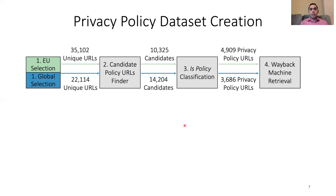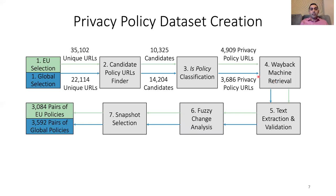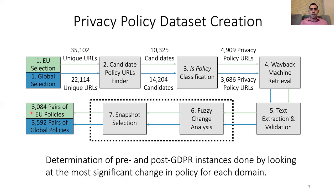For each identified policy, we queried the Wayback Machine to get snapshots from 2016 to 2019. We extracted the text from these snapshots and analyzed how privacy policies changed over time, ending up with around 3,000 pairs of EU policies and 3,600 pairs of global policies covering before and after the GDPR. To determine the pre- and post-GDPR versions, we looked at the most significant change in the policy for each domain closest to May 2018 — calling the first version before that date the pre-GDPR policy and the most recent one the post-GDPR policy.